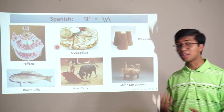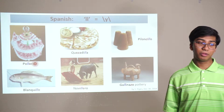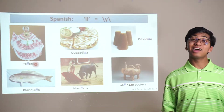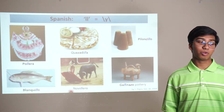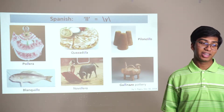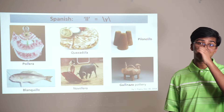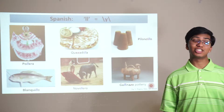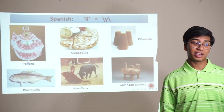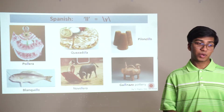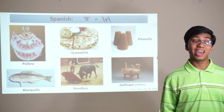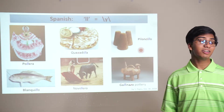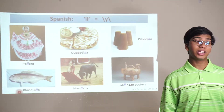In pollera, for example — a Latin American fiesta costume usually heavily embroidered and full in the skirt — the LL is in the middle. The same happens in novillo. A novillero is an aspiring bullfighter who has not yet attained the rank of matador. Gallinazo means of or relating to an ancient culture of northern Peru characterized by negative painted pottery. Gallina means hen. You also have piloncillo, which is dark brown sugar, and blanquillo, which is a whitefish.